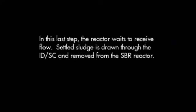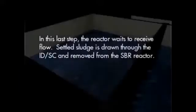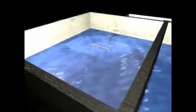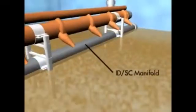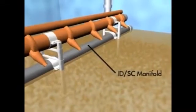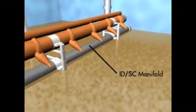In this last step, the reactor waits to receive flow. Settled sludge is drawn through the influent distribution sludge collection manifold and removed from the SBR reactor.